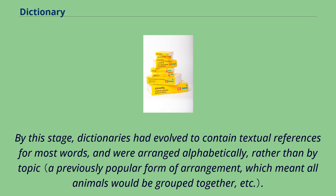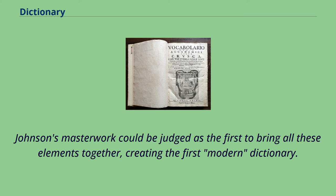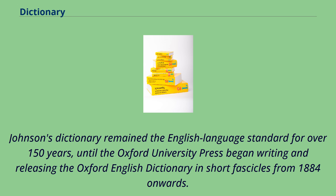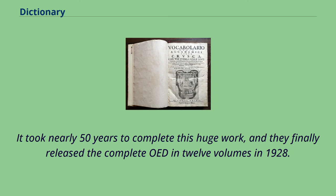By this stage, dictionaries had evolved to contain textual references for most words and were arranged alphabetically, rather than by topic. Johnson's masterwork could be judged as the first to bring all these elements together, creating the first modern dictionary. Johnson's dictionary remained the English language standard for over 150 years, until the Oxford University Press began writing and releasing the Oxford English Dictionary in short fascicles from 1884 onwards. It took nearly 50 years to complete, and they finally released the complete OED in 12 volumes in 1928.